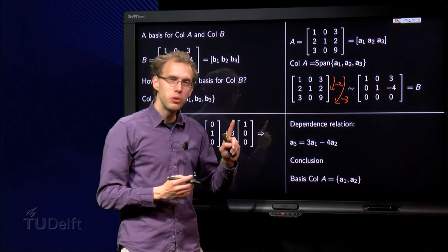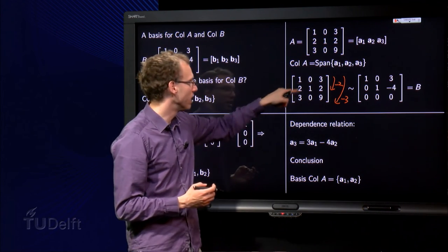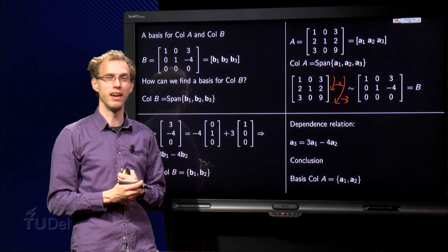We took here the a₁ and a₂, so the [1, 2, 3] and the [0, 1, 0], as a basis for col A.